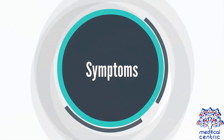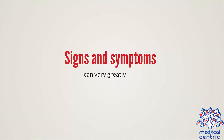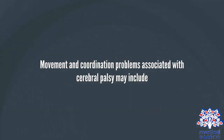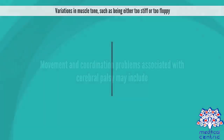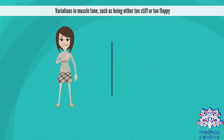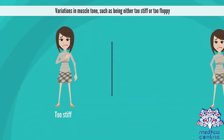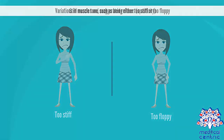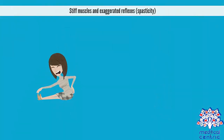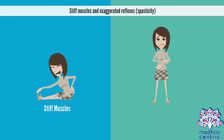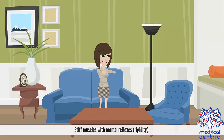Symptoms. Signs and symptoms can vary greatly. Movement and coordination problems associated with cerebral palsy may include variations in muscle tone, such as being either too stiff or too floppy; stiff muscles and exaggerated reflexes; spasticity — stiff muscles with normal reflexes; and rigidity.